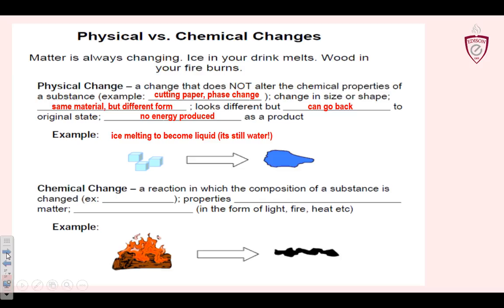Chemical change — we're actually going to change what it is. We started with one thing and we end up with another. Example: rusting. The properties are not the same as the original matter. Energy is produced — if something gets hot and gives off heat, the heat leaves and it can't just go back. You can't put the heat back into the wood after you burn it. It's changed from wood to ash — that black blob is supposed to be ash. It's literally not wood anymore. The chemical composition has changed.